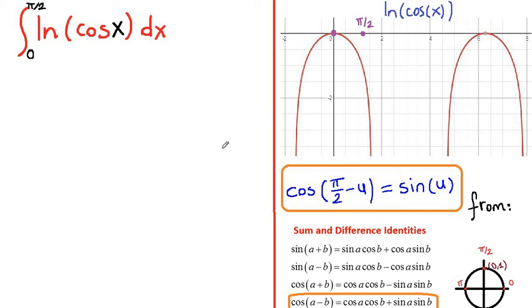Hello everybody. In this video, we are going to integrate ln of cosine of x from 0 to pi over 2. Let's start calling this integral equal to i.